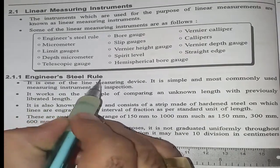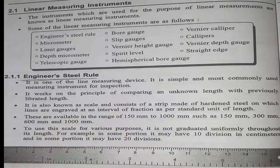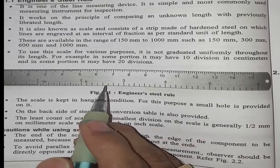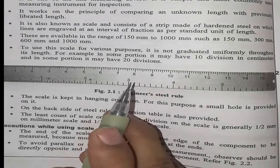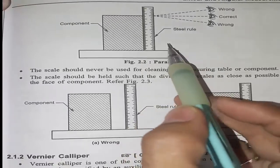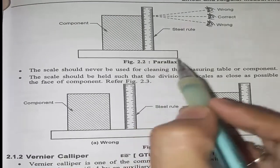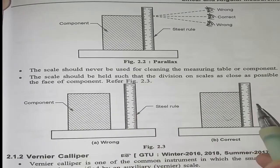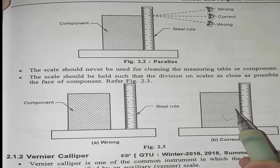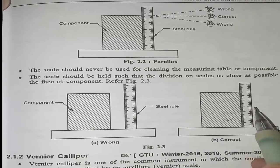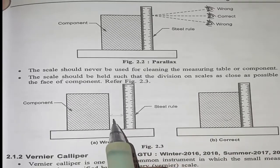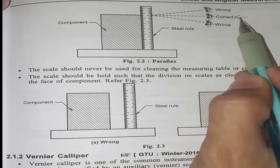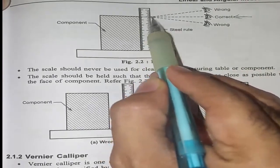The steel rule, or scale, is briefly explained here. It is not so important because it is very common. What matters is the correct method for measurement. The scale should be touching the object, or very near to it — it should not have some distance from the object. When you measure, you should measure in a straight line.